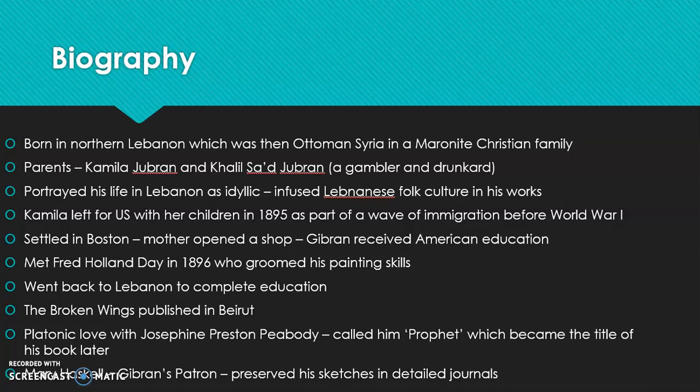However, Kamila Gibran was quite apprehensive about Khalil Gibran's friendship with these avant-garde painters, who were extremely modern in their attitude and had many friendships with women. This created fear in Kamila's mind, so she sent him back to Lebanon to complete his education. It was there that he published the work 'The Broken Wings,' originally published in Arabic and later translated into English.